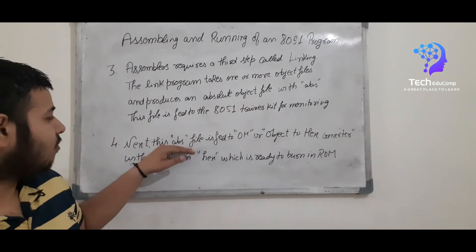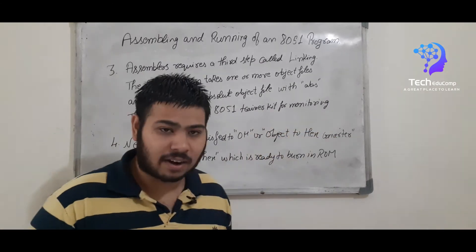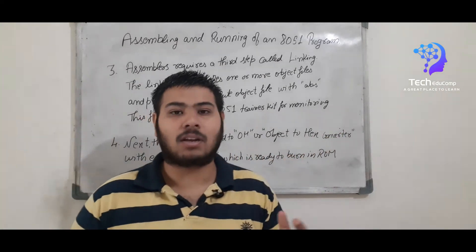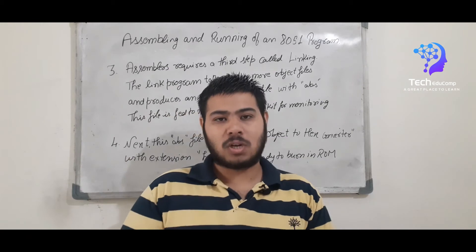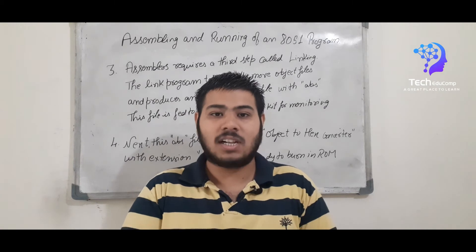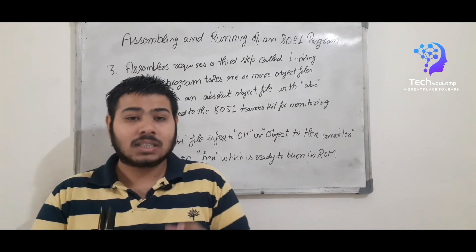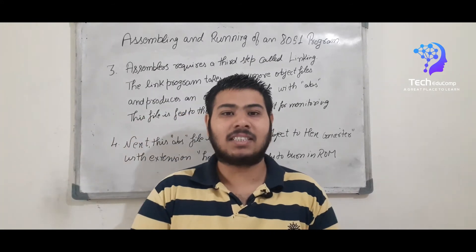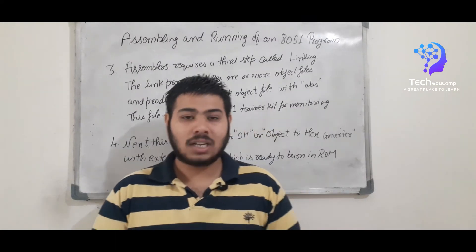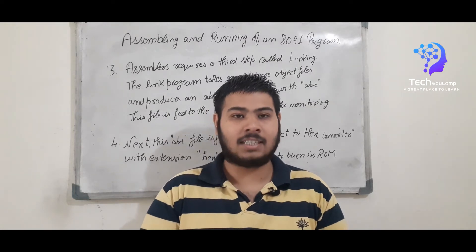This absolute object file is then fed to an OH converter, which converts the object file to a hex file. This hex file is then burnt into the ROM of the microcontroller. This is the same hex file I have shown in my previous technical video, and I will give that link in the info button. All these steps are summarized in a block diagram as you can see on your screen. Now let's talk some more about the object file and assembly language file.